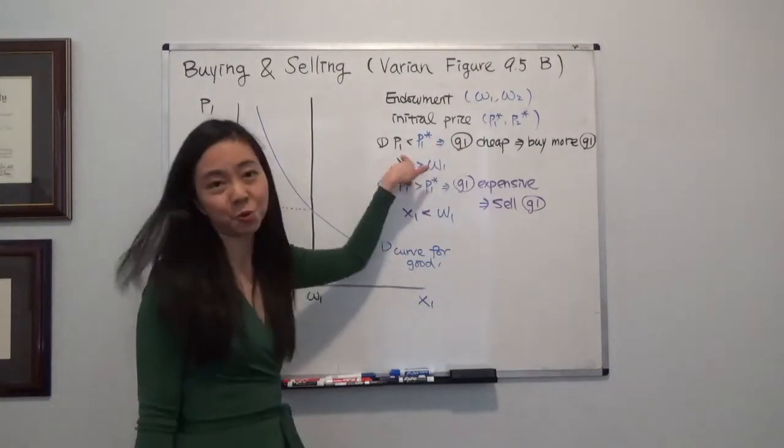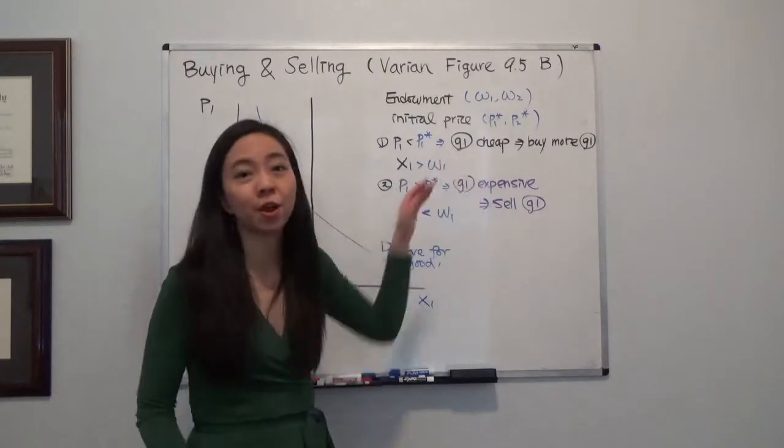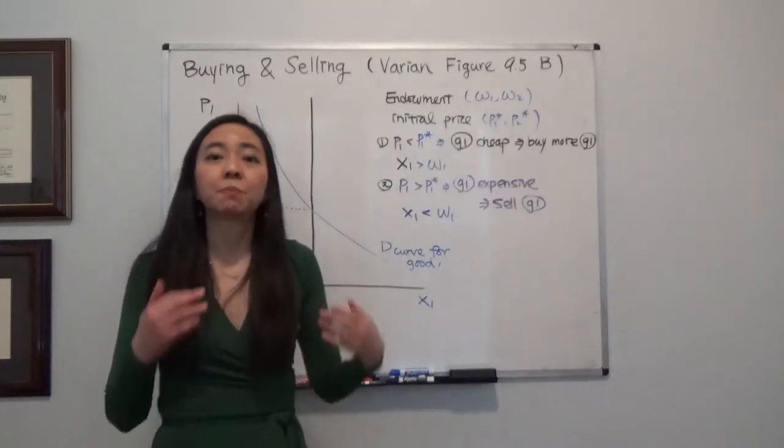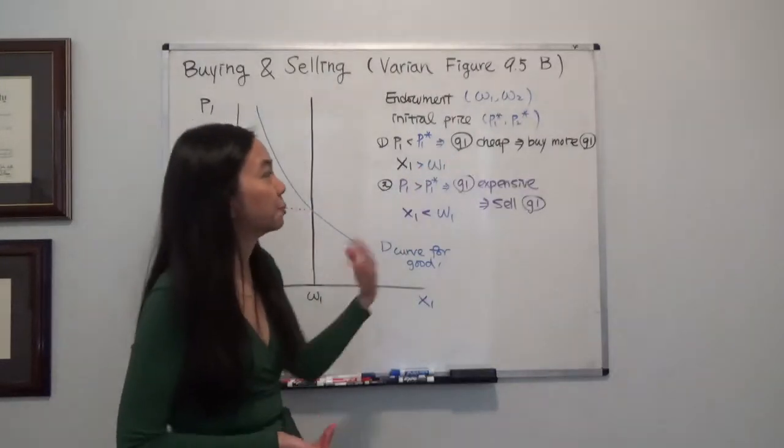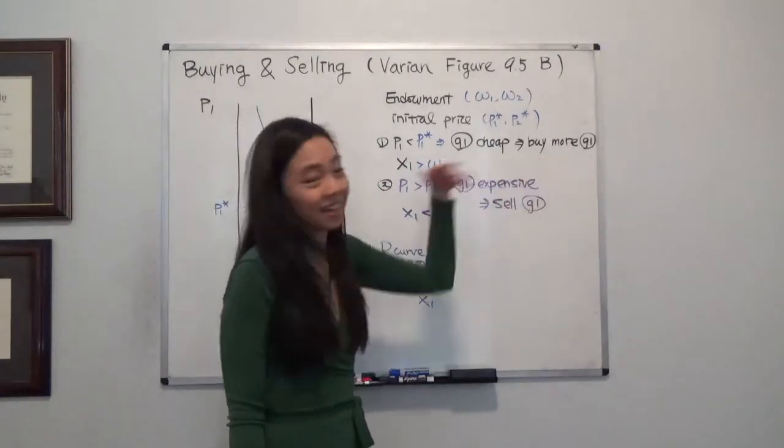So we have a new lower price, that means good 1 has become relatively cheaper. That means it makes sense for me to buy more good 1 and sell my good 2.